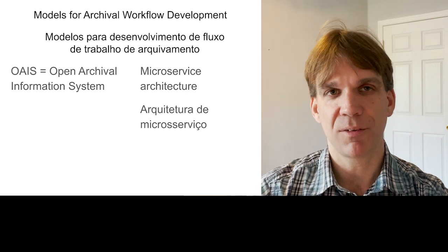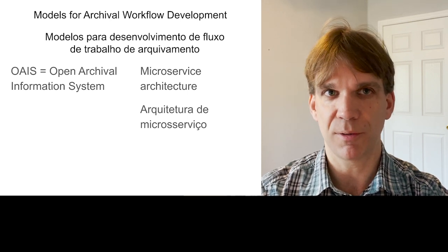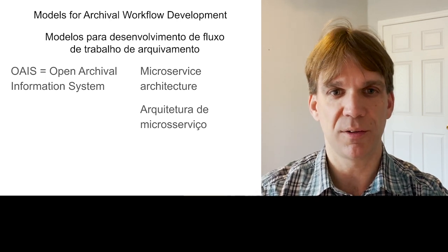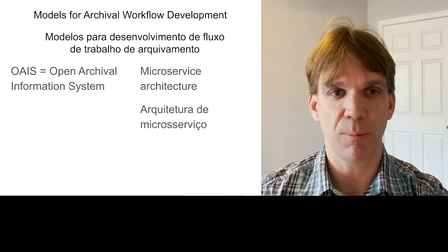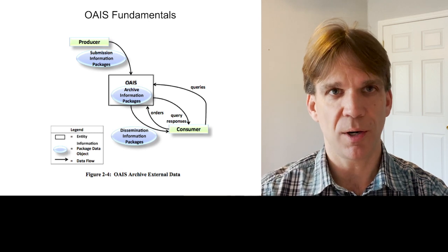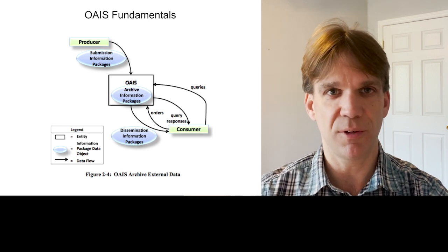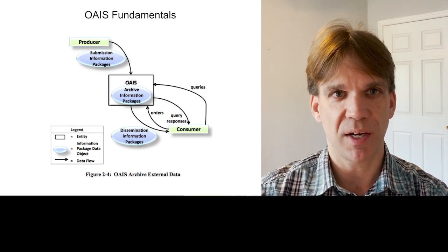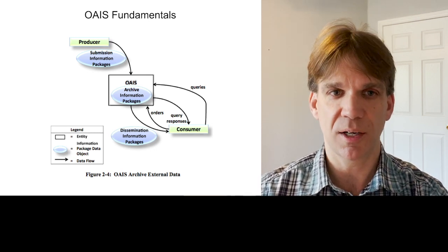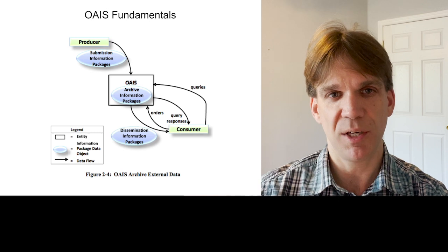OAIS is probably a familiar term to most archivists, and I'll explore what parts of it I found to be most helpful in archival workflow development. The most familiar part of OAIS is probably this image, which depicts the relationship between three entities and three packages. A producer provides a submission information package to the archive, which transforms that package into an archive information package. Later, a consumer makes a request to the archive and receives a dissemination information package.